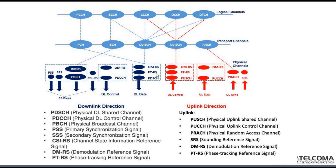In the uplink, we have DMRS, PTRS, PUSCH similar to LTE, and PUCCH similar to LTE with DMRS. There is also PRACH for initial uplink access and SRS. Because the UE wants to send some reference signaling to the gNodeB, this is done through SRS, which can be enabled or disabled as per the requirement.